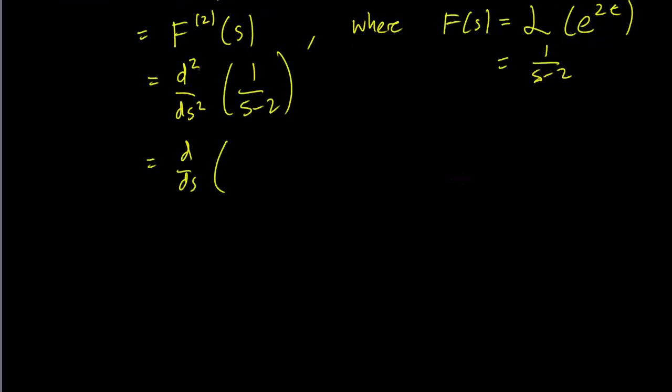is just going to be minus 1 over s minus 2 squared, and the second derivative is going to be 2 over s minus 2 cubed, and it's that easy.